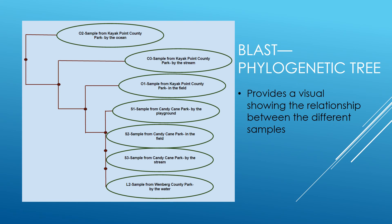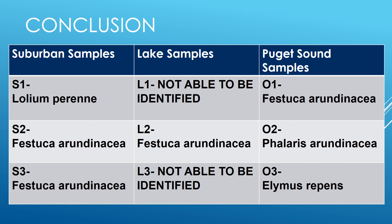BLAST was also used to create a phylogenetic tree by comparing the sequences of the samples to one another. The phylogenetic tree showed the relationship of the different samples to one another based on their sequences and how many matching bases they contained. Those relationships were then able to confirm the identifications of each species found in the previous step, providing additional data to support the samples' classifications. Due to the lack of information from the two samples that were unable to be sequenced, they were not able to be identified or added to the phylogenetic tree, although the family L3 belonged to was identified on the basis of the RBCL sequence.